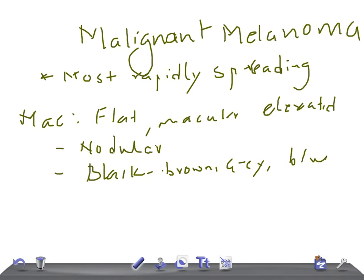If you look at the borders of these tumors, they are irregular. The borders are irregular. So these are the important macroscopic features of malignant melanoma.